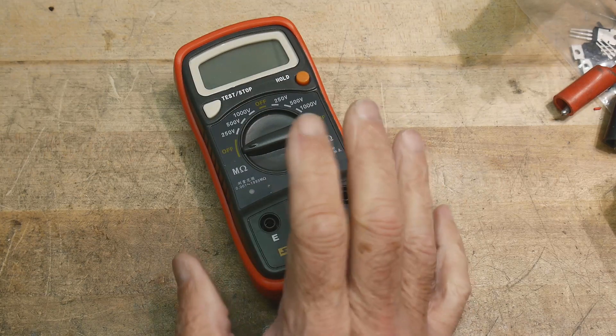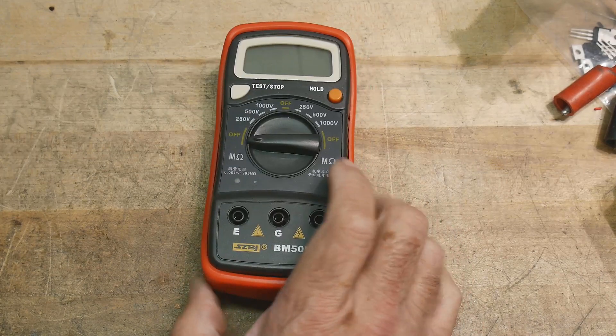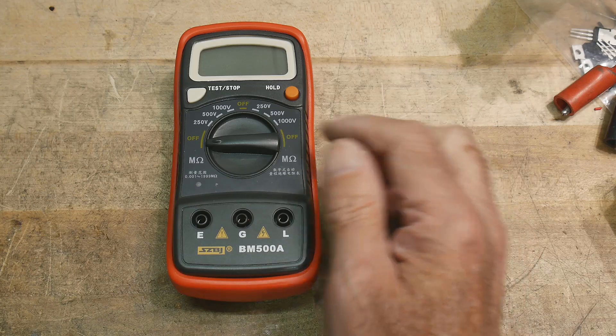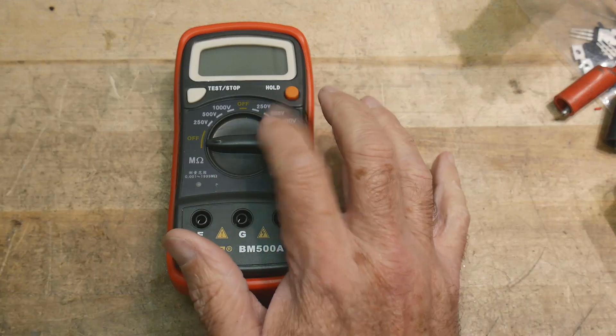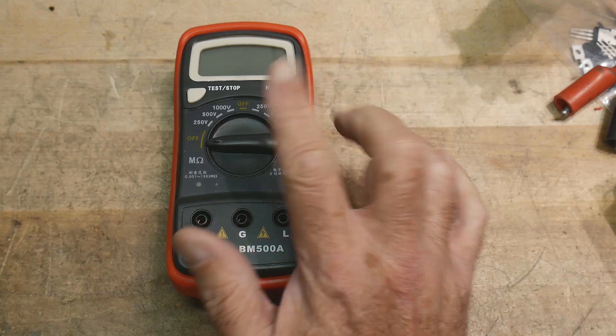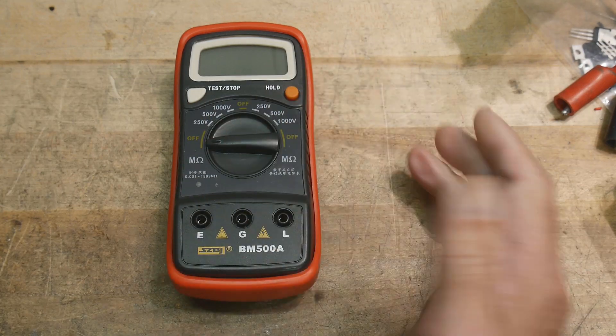I've seen real expensive ones like out of Germany and stuff but this is an insulation tester. It's good up to 2,000 mega ohms so 2 gig ohms. It's supposed to measure up to 2 gig ohms.